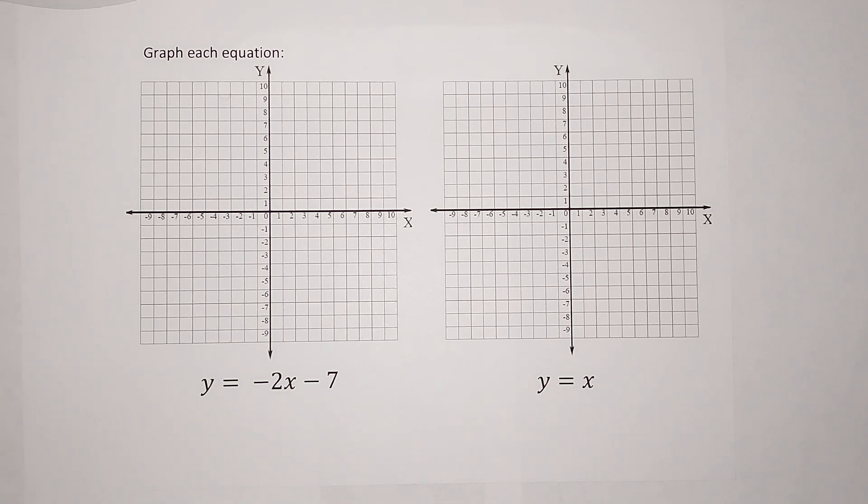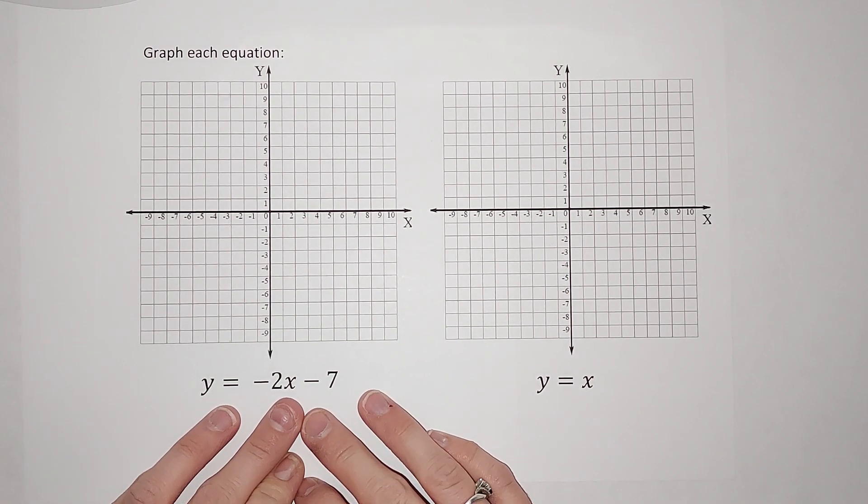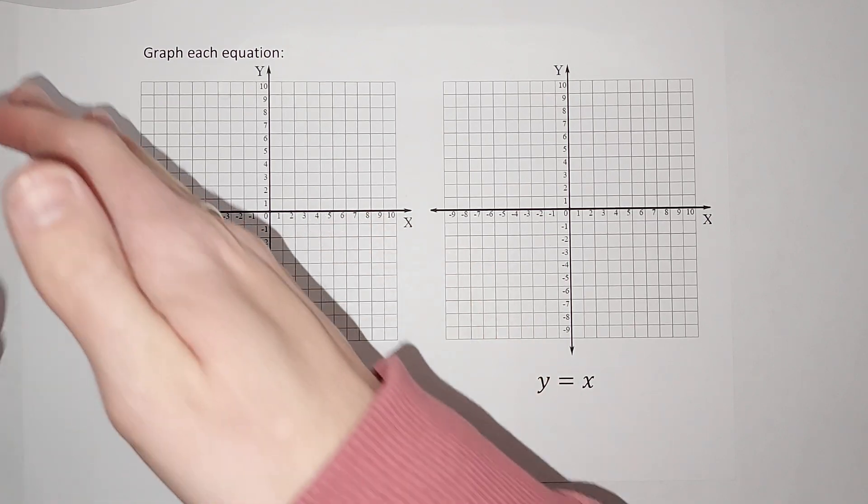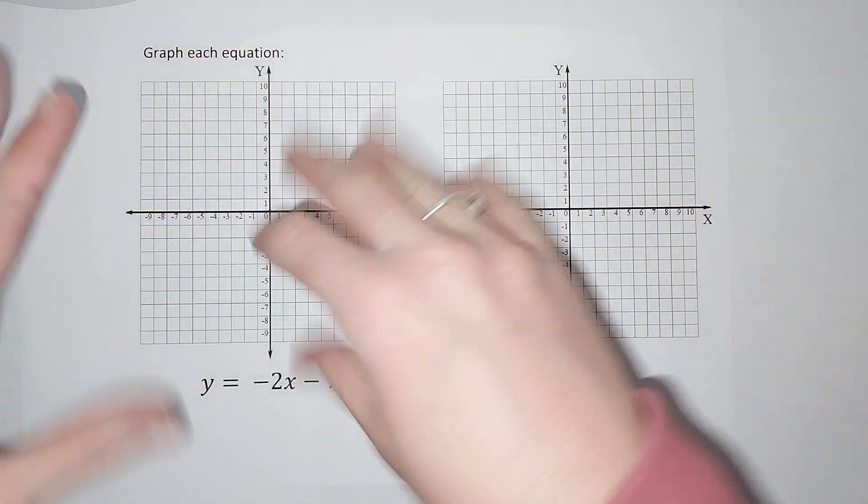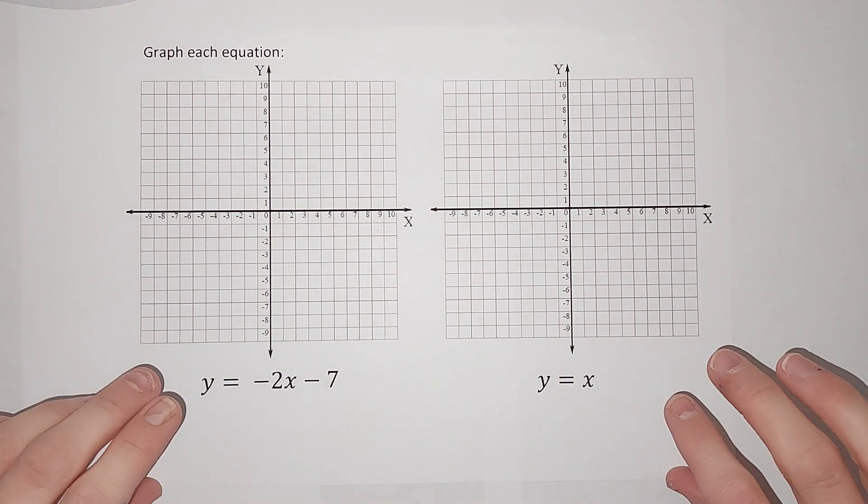You've probably been building up to this. When you first started this unit, you were probably plugging in numbers for x and getting a y. That was your ordered pair. And then you were plotting those and making a line, right? That is great. But guess what? This is a faster way. We like faster, right? Get your homework done sooner.